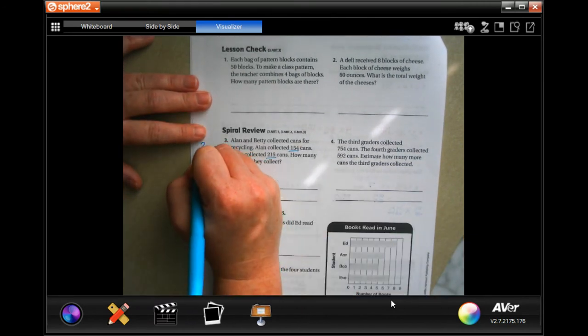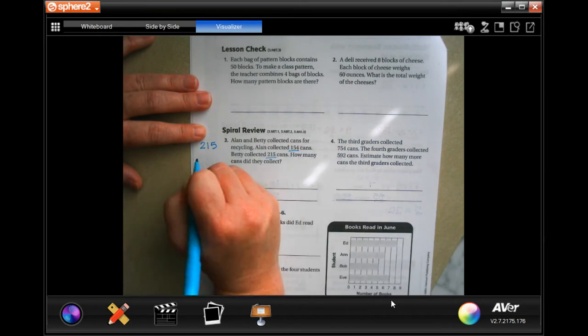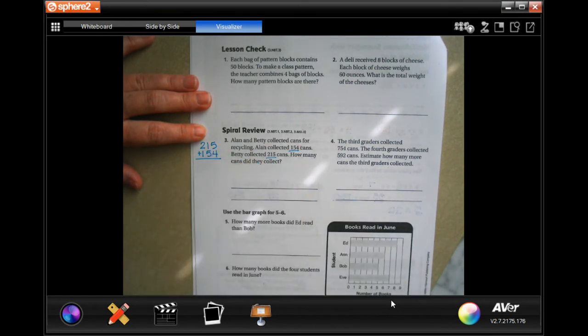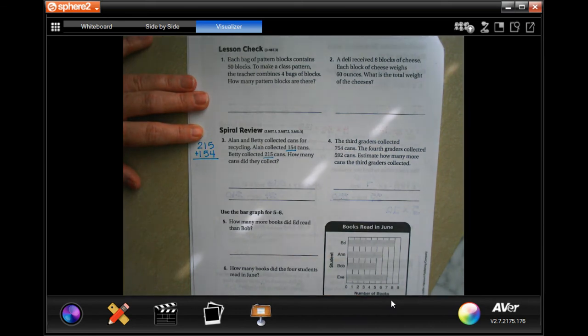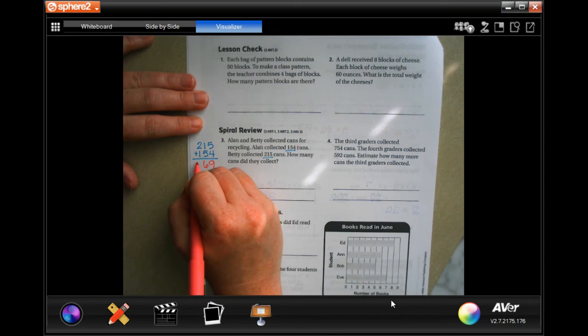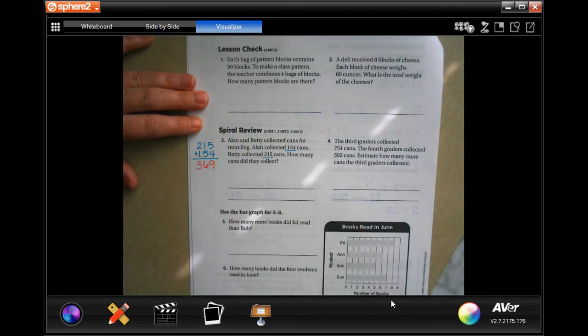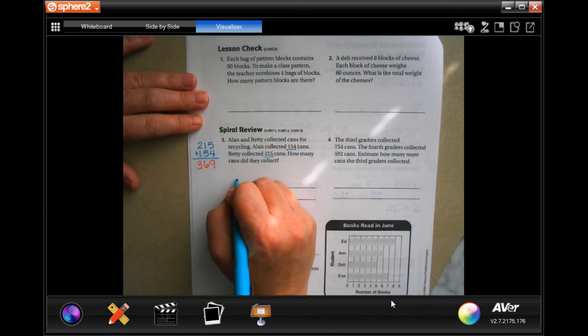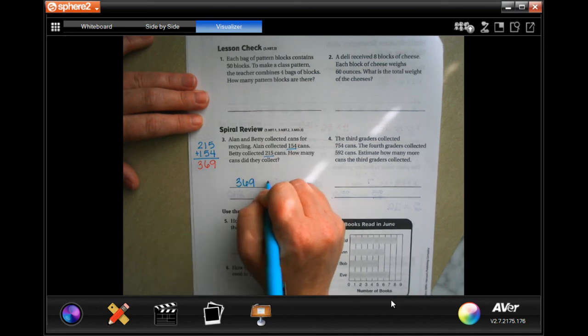Well, all you have to do is add those. So 215 and 154, and we're going to add those up. So 5 plus 4 is 9, 1 plus 5 is 6, and 2 plus 1 is 3. So 369 cans.